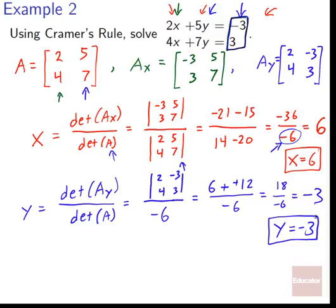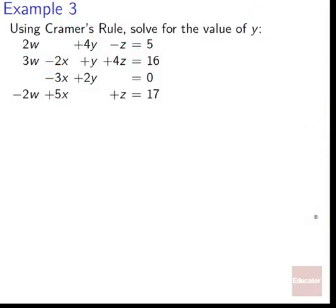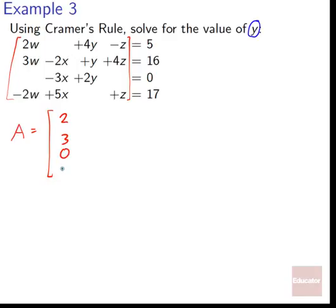Example 3: Now we use Cramer's rule to solve for y only in a 4-variable system (w, x, y, z). The coefficient matrix A has columns for w, x, y, z respectively. Where w appears: 2, 3, 0, −2. For x: 0, −2, −3, 5. For y: 4, 1, 2, 0. For z: −1, 4, 0, 1. Missing variables get a coefficient of zero.